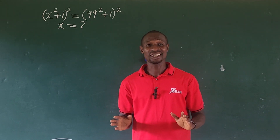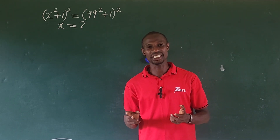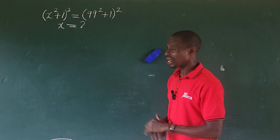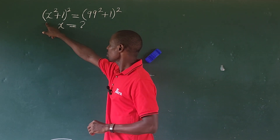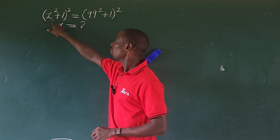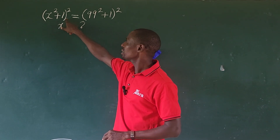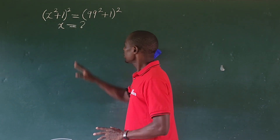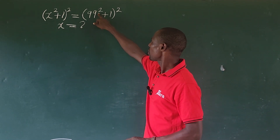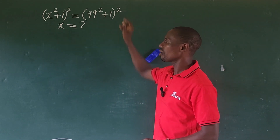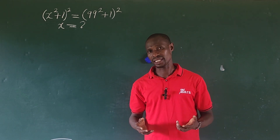Hi everyone, welcome to today's class. Today we have another nice exponential challenge, another nice algebraic problem. The question reads: bracket (x to the power of 2 plus 1) all to the power of 2, equal to bracket (9 to the power of 2 plus 1) all to the power of 2. What would be the possible values of x?